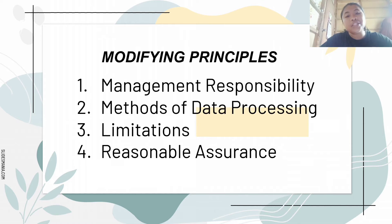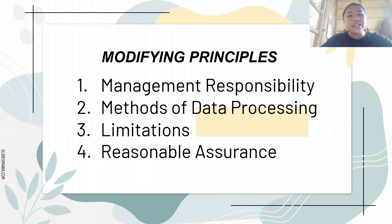Next, we have the methods of data processing. Despite the data processing methods being employed — whether manual or computer-based — the system of internal control must meet the four main objectives. Nonetheless, different sorts of technology will require different ways to reach these goals.